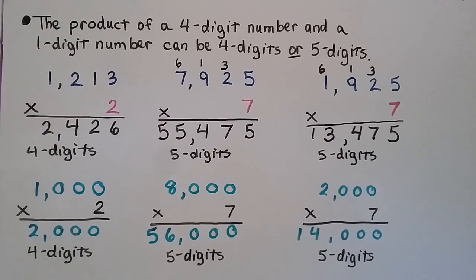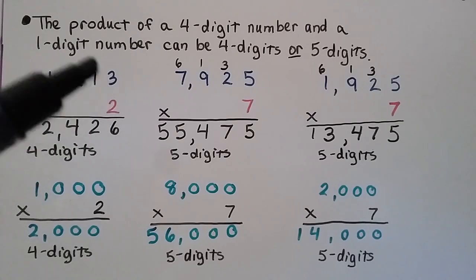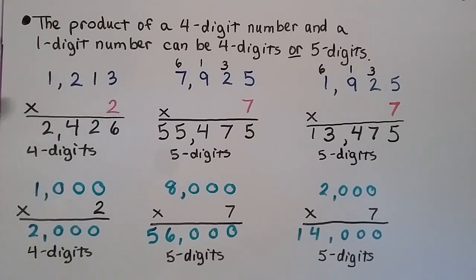It's much quicker than having to multiply each place value to get the actual amount. By estimating, we can quickly see how many digits are supposed to be in the product.